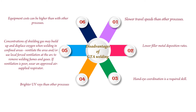Disadvantages of Gas Tungsten Arc Welding: 1. Slower travel speeds than other processes. 2. Lower filler metal deposition rates. 3. Hand-eye coordination is a required skill. 4. Brighter UV rays than other processes. 5. Concentrations of shielding gas may build up and displace oxygen when welding in confined areas.